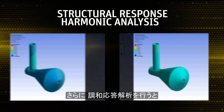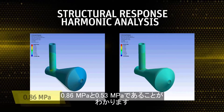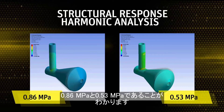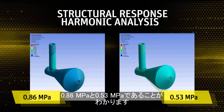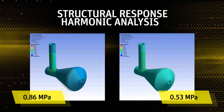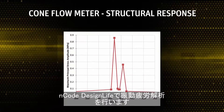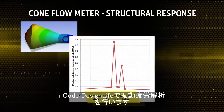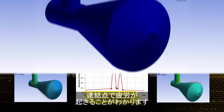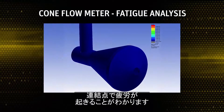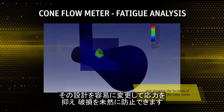In addition, the results of the harmonic response analysis showed peak stress levels at 0.86 and 0.53 MPa caused by fluid induced vibration forces from vortex shedding loads. Finally, the harmonic analysis stress results are used to perform vibration fatigue analysis using best-in-class ENCODE Design Life. The fatigue region is identified at a connection point that can easily be redesigned to reduce stresses and eliminate failure points.